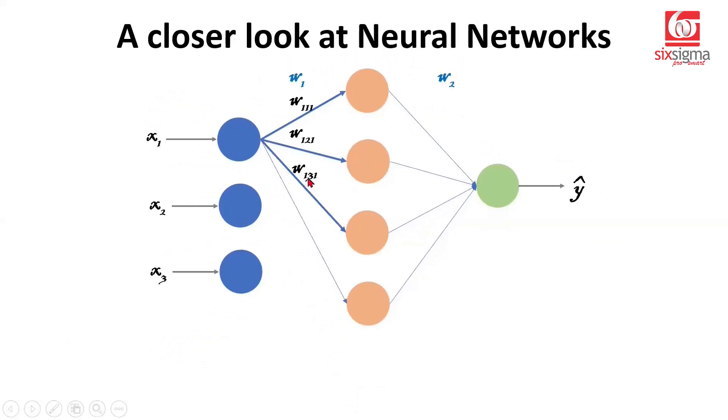Likewise, the third one would be w1,3, third neuron of the hidden layer and the first neuron of the input layer. And likewise, this is going to be w1,4,1.